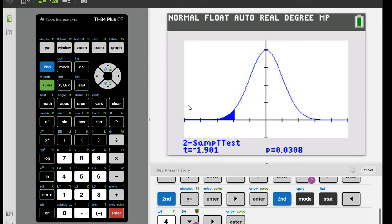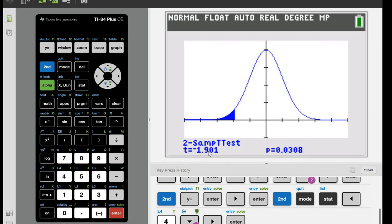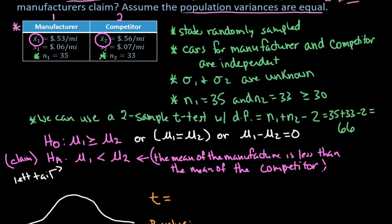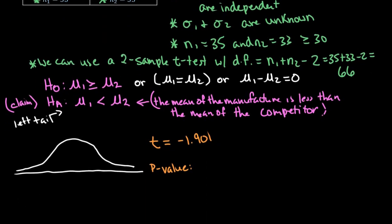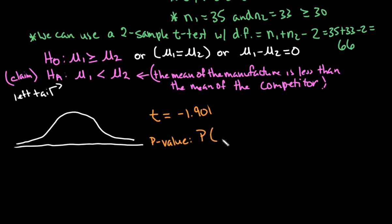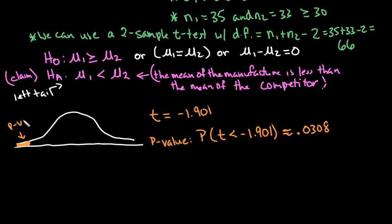At the bottom of the screen, we can see that t is approximately negative 1.901 and the p-value is approximately 0.0308. The p-value is the probability that our t-value is less than negative 1.901. When you draw your model, you would shade about 3% of the area — that's our p-value of 0.0308, starting at t equals negative 1.901.